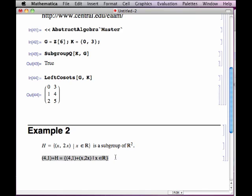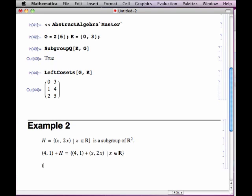So I'll format that. So that's the definition of the coset (4, 1) plus H.